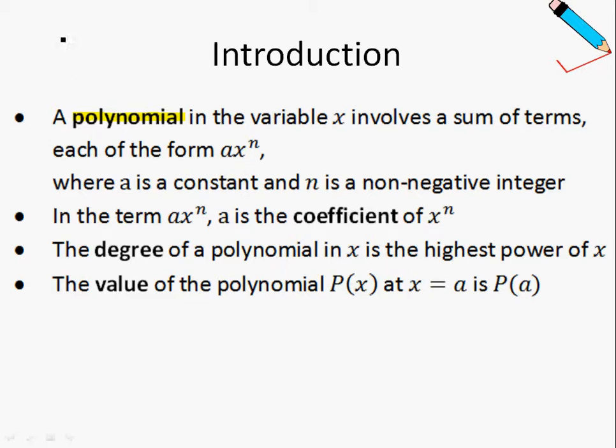For example, if I have a quadratic polynomial, the general form of a quadratic polynomial will be in this form: fx equals ax squared plus bx plus c, where a, b and c are constants, and n is a non-negative integer.